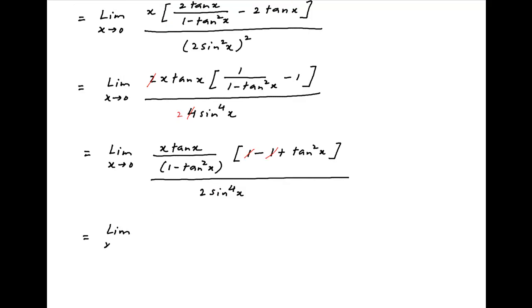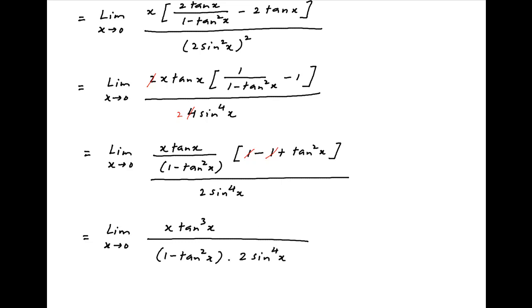This simplifies and is equal to the limit x tending to 0, x times tan³x divided by (1 minus tan²x) multiplied by 2 times sin x raised to the power 4.